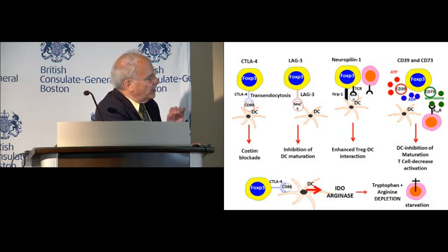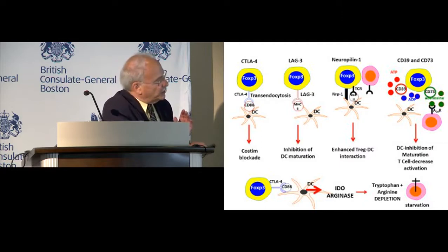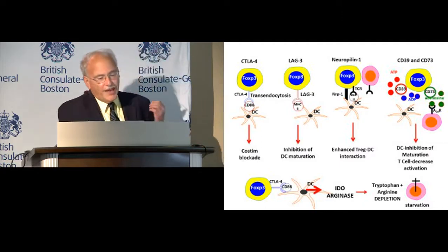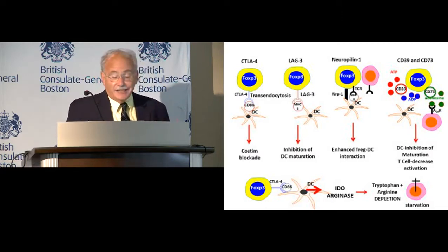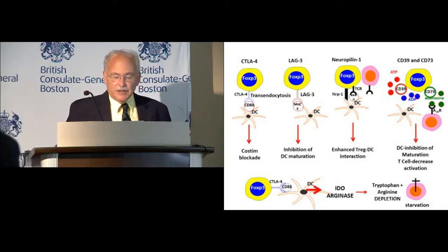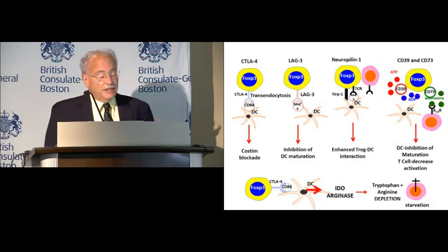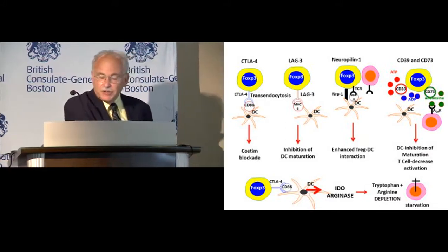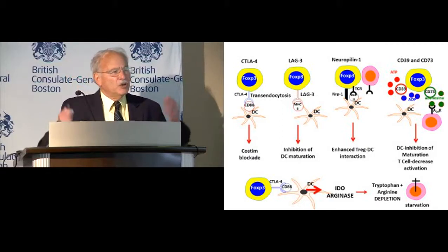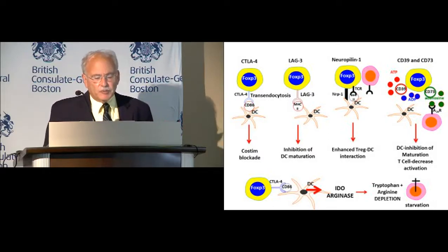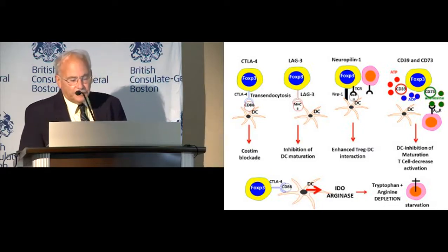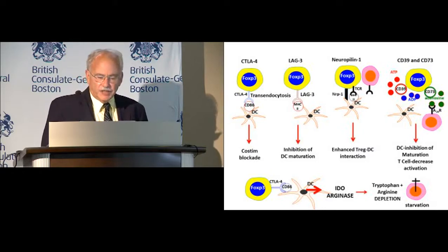Regulatory T cells also appear to express two ectoenzymes on their surface: CD39 and CD73. CD39 degrades ATP — an inflammatory molecule — to ADP, thereby stopping inflammation. If the cells also express CD73, the ATP is further degraded to adenosine, an immunosuppressive molecule that binds A2AR receptors to suppress effector cell function. The problem is that many activated conventional T cells also express CD39 and CD73, so it's not clear this is a unique property of regulatory T cells.